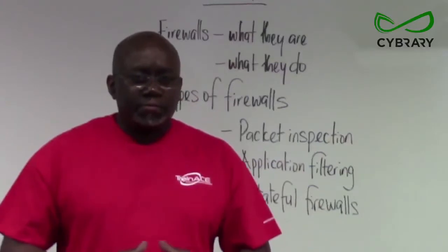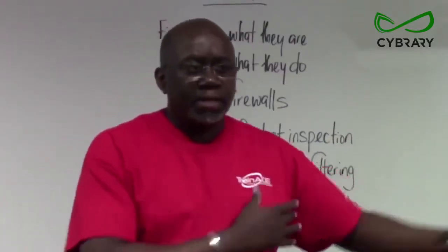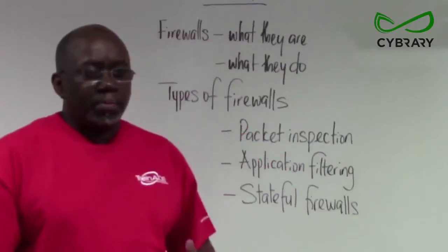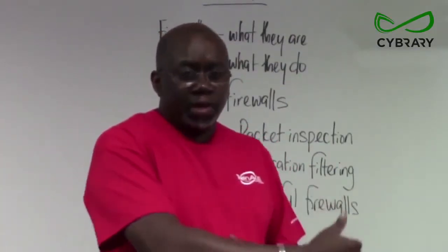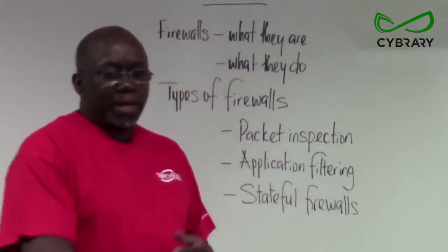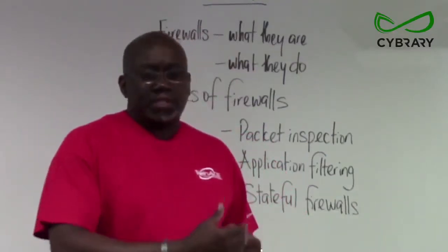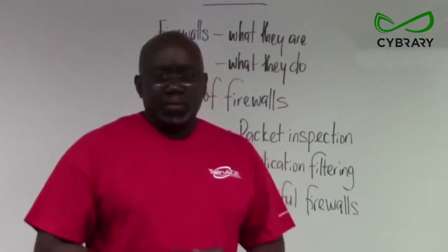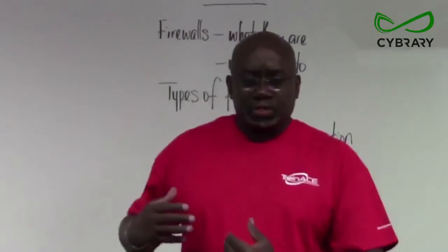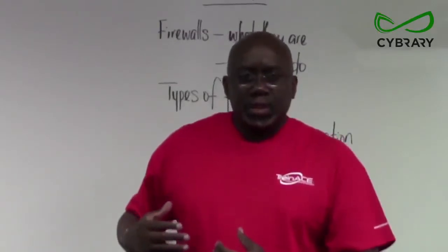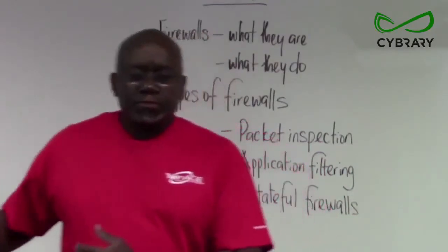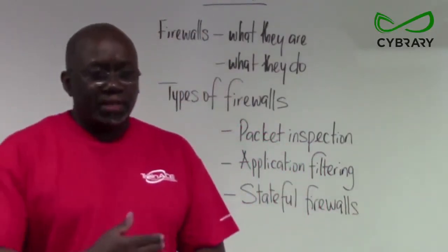The first line of defense for any network is to defend against the public network — that is the internet. Any traffic coming from the internet, your first line of defense should be a firewall. The firewall would inspect the traffic to see if it should be allowed into the network or denied access. Firewalls also inspect outgoing traffic to ensure confidential and private information does not leave the network. Firewalls are in place to prevent that as well, and they can also prevent internal users from accessing the internet.